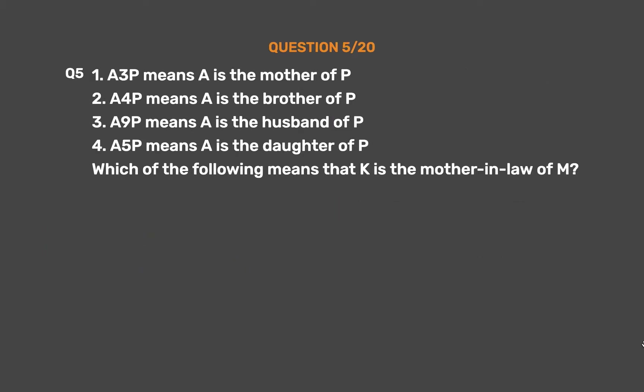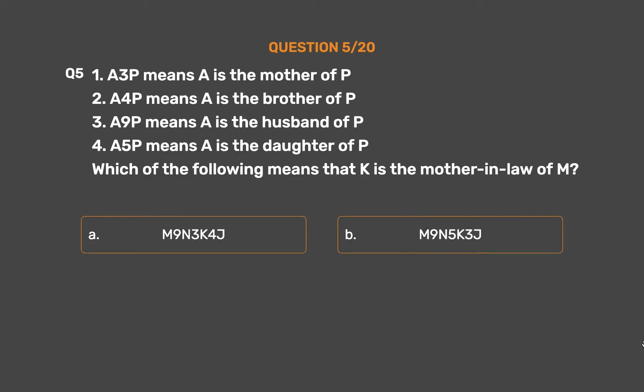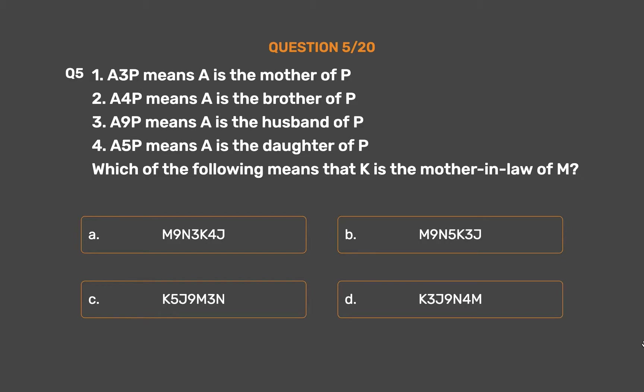Question number 5. Given: (1) A i P means A is the mother of P; (2) A 4 P means A is the brother of P; (3) A 9 P means A is the husband of P; (4) A 5 P means A is the daughter of P. Which of the following means K is the mother-in-law of M? Option A: M9N3K4J. Option B: M9N5K3J. Option C: K5J9M3N. Option D: K3J9N4M.